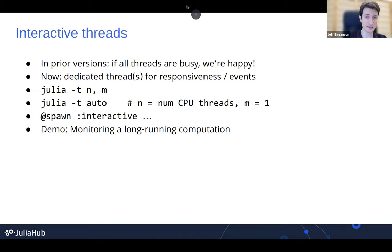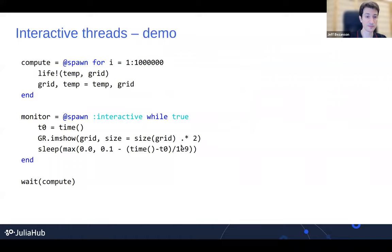I've got a little demo of this. Something you might use it for is monitoring a long-running computation. The basic shape of the program: I've got the compute task that spawns a really long loop doing iterations, updating a grid. Then I've got a monitoring task, which I'm spawning into the interactive pool. This just runs forever, waiting some amount of time — about every tenth of a second — then looks at the state of that grid and does a GR plot of it so we can look at it. Then we just wait for the compute to finish.